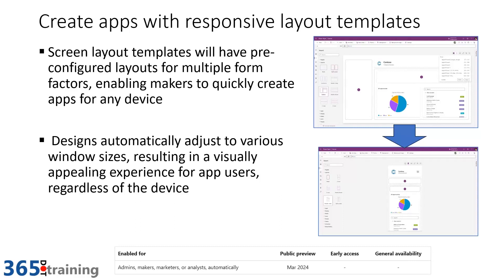One of the areas that's always been improving in Power Apps is creating responsive applications — things that adjust automatically to window sizes or different devices without putting the burden on the app maker. One of the things in the new release that will help a lot is responsive layout templates. These are pre-configured layouts for multiple form factors that do the hard work to allow responsiveness to flow. You can see the desktop view and the mobile view just flowing automatically.